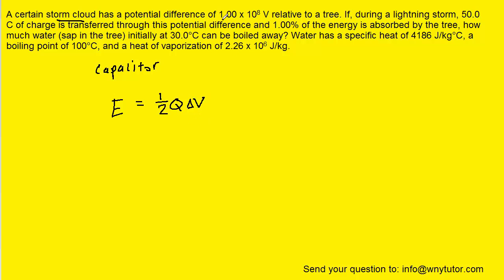The question gives us directly the potential difference as well as the amount of charge. The only thing we have to be careful about is that only one percent of this energy is actually being absorbed by the tree. So what we'll do is take that energy and multiply it by one percent, which is 0.01 expressed as a decimal.